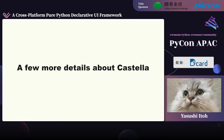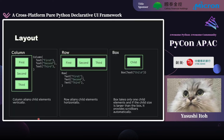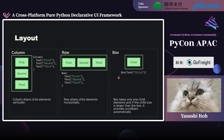From the next slides, I'm going to explain a few more details about Castella. Castella has three widgets for UI layout: Column, Row, and Box. Column aligns child elements vertically, Row aligns child elements horizontally, and Box takes only one child — if the child's size is bigger than the parent box, the parent box provides scroll bars automatically.